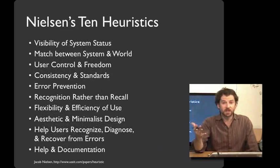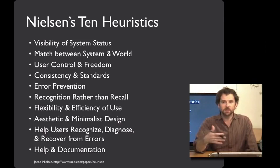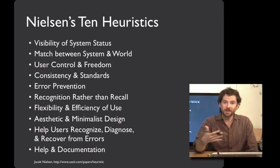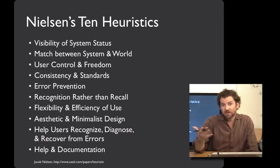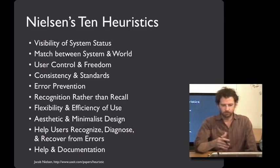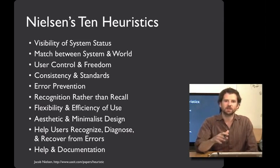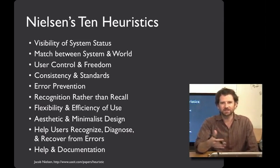Here's Nielsen's 10 heuristics, and they're a pretty darn good set. There's nothing magic about these heuristics — they do a pretty good job of covering many of the problems that you'll see in many user interfaces. But you can add on any that you want and get rid of any that aren't appropriate for your system. We're going to go over the content of these 10 heuristics in the next couple of lectures. In this lecture, I'd like to introduce the process that you're going to use with these heuristics.